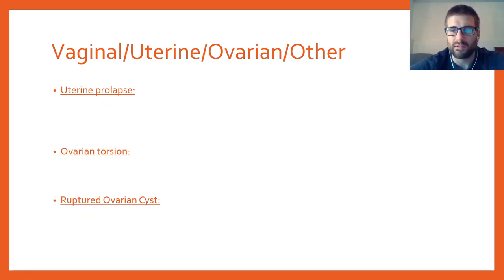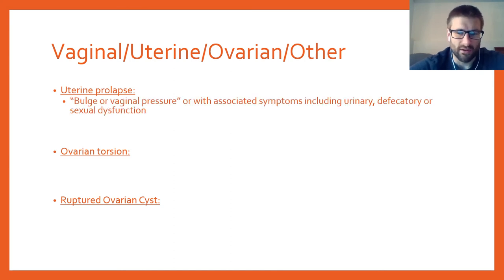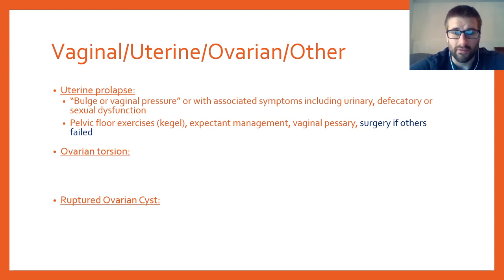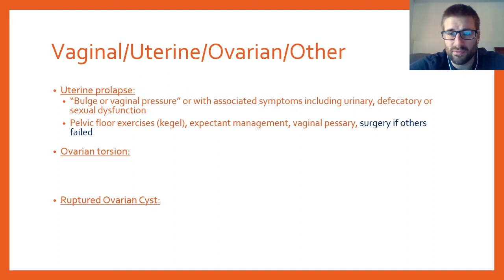Moving on to pelvic organ pathology: pelvic organ prolapse typically presents with a bulge or vaginal pressure along with some combination of urinary, defecation, or sexual dysfunction. The physical exam identifies which organ is prolapsing. Treatment follows a stepwise approach: pelvic floor exercises (Kegels), expectant management if symptoms are mild, vaginal pessary for support, uterine support, and surgery if other options fail.